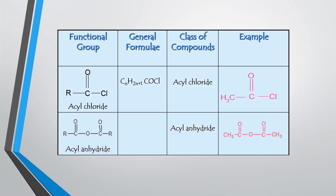The two last functional groups are acyl chloride and acyl anhydride. Acyl chloride consists of C double bond O with Cl. This functional group has the same name as its class of compound. The same applies to acyl anhydride. The structure for the acyl anhydride functional group is C double bond O, O, C double bond O.